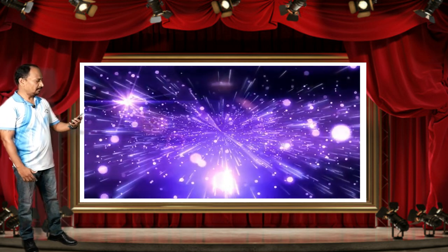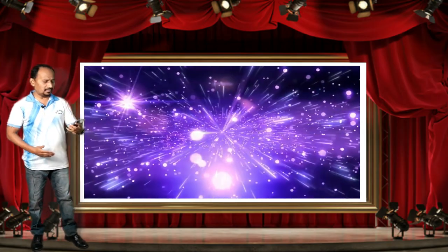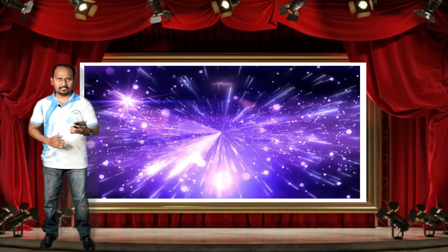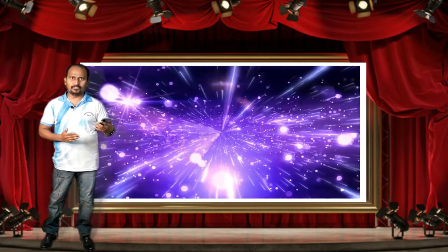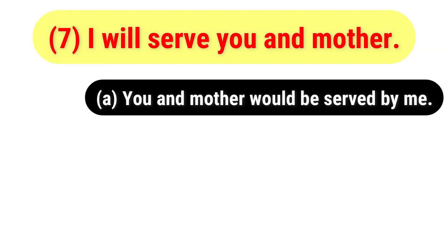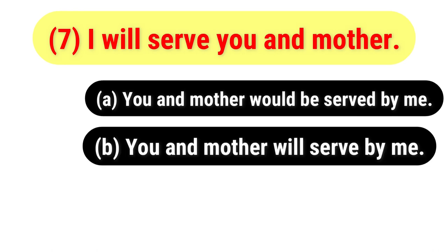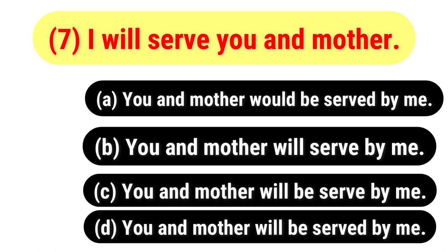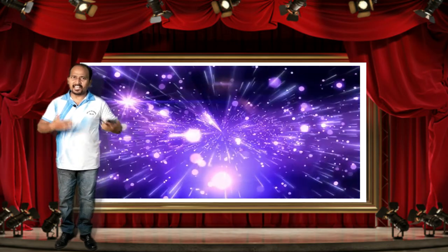Question seven is in active voice: 'I will serve you and mother.' You have to change it to passive voice. The options are: A) You and mother would be served by me; B) You and mother will serve by me; C) You and mother will be served by me; D) You and mother will be served by me. Your time begins now.